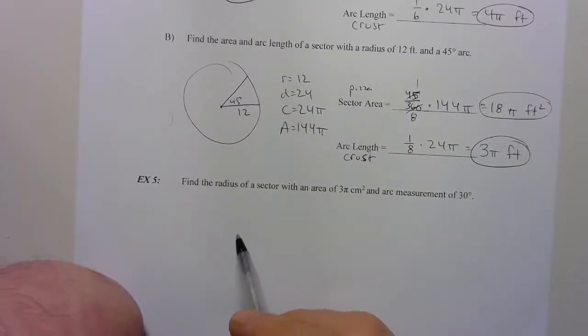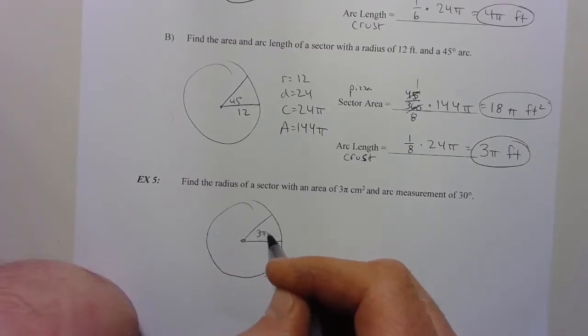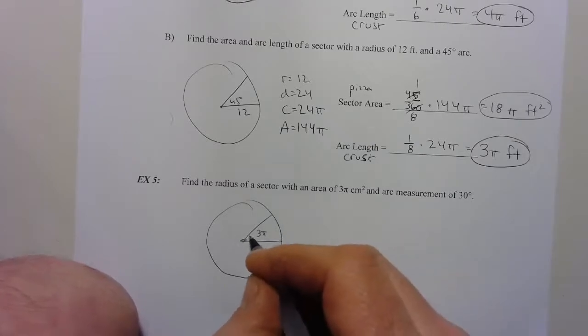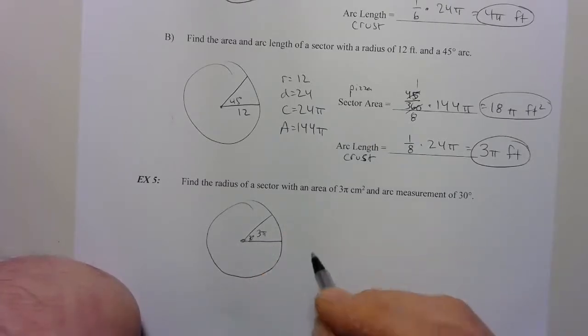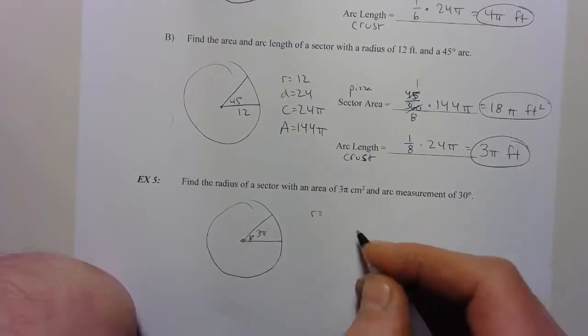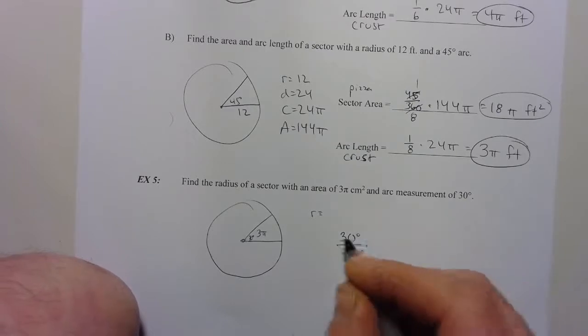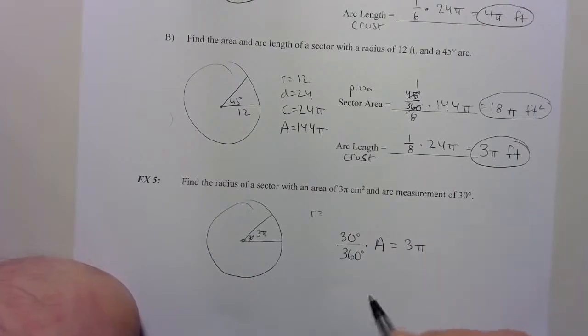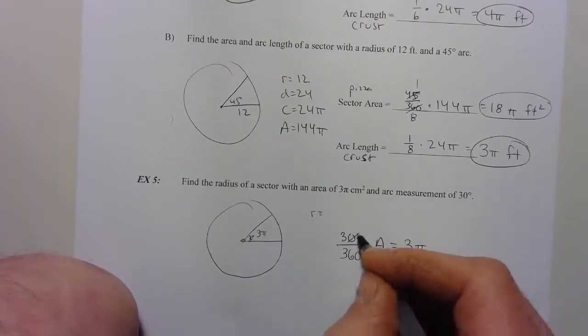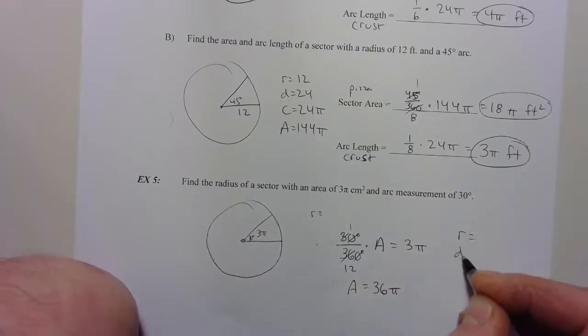Example 5. Find the radius of a sector with an area of 3 pi. So this one tells us this is 3 pi square centimeters. And the arc is 30 degrees. We need to find the radius. So we don't know the radius. We know we have 30 degrees over 360 degrees. And we're doing, this is the area. So I'm going to just put A for area equals 3 pi. So let's figure out what the area is. And then we can get the other information. If I reduce my fraction, 1 twelfth. So I can multiply both sides by 12. So the area is 36 pi.